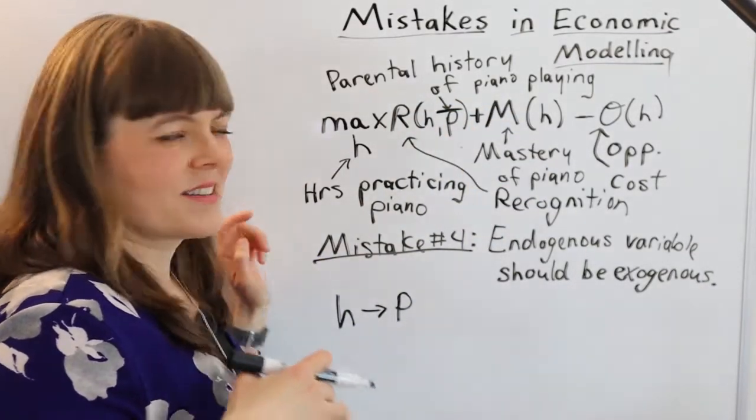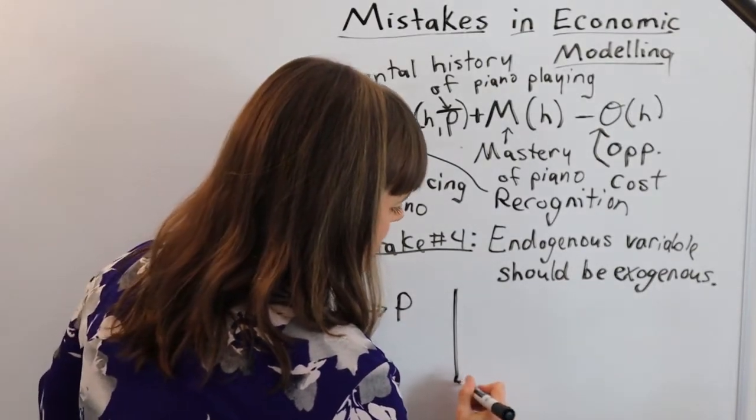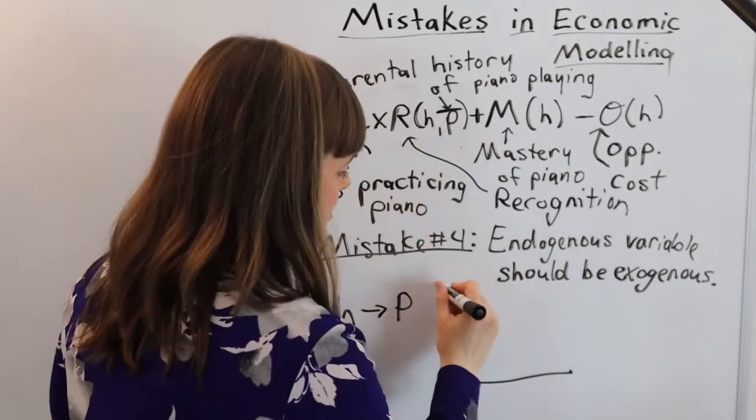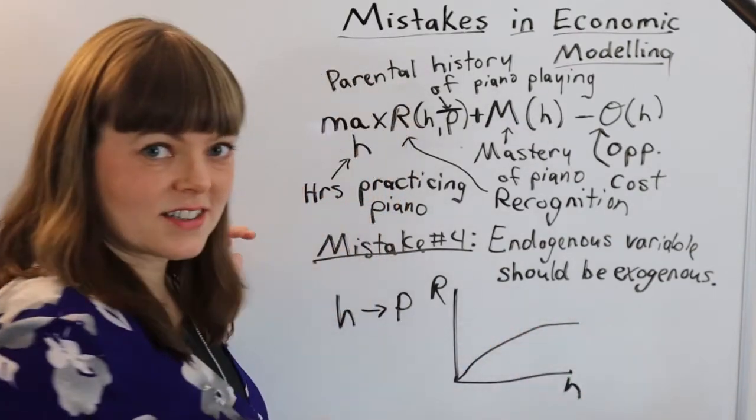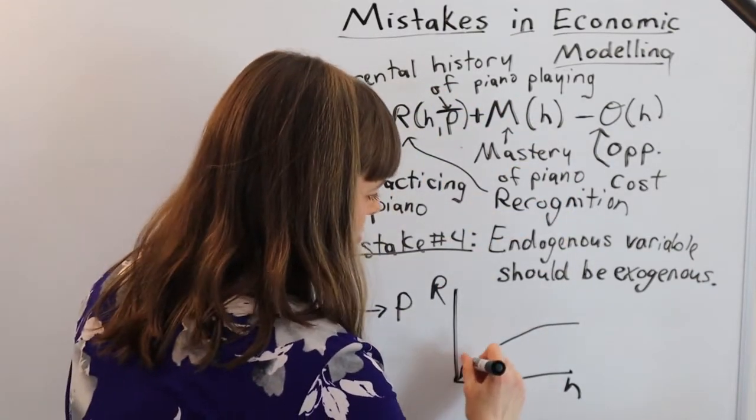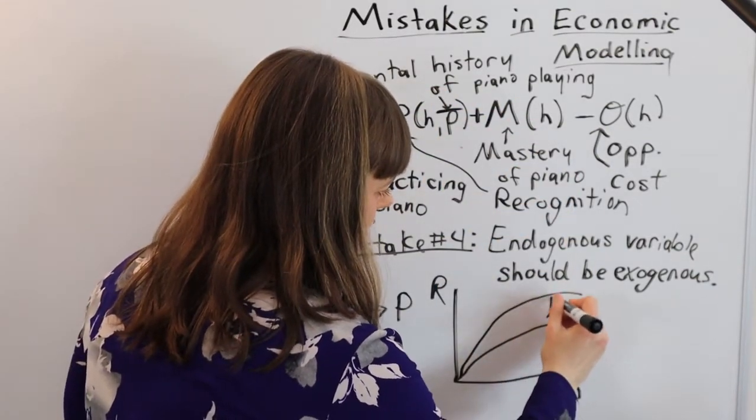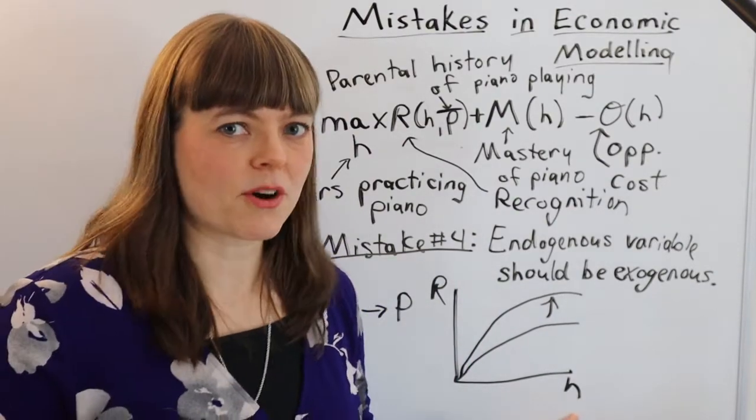And of course, to think about that correlation that you're trying to build in, you want to draw a picture of this graph, graph of recognition as a function of hours playing the piano. And you know that when the parents have a history of playing the piano, that's going to rotate this graph up. It's going to lead to more recognition for every hour the child plays.